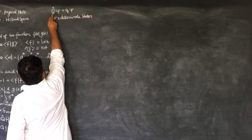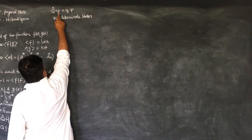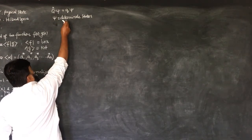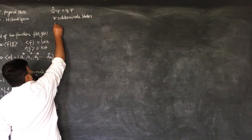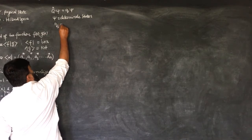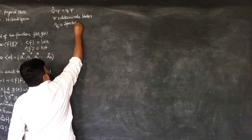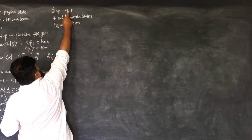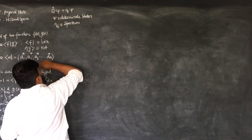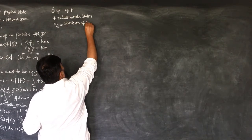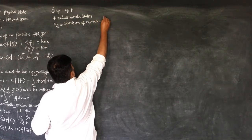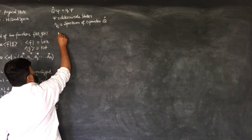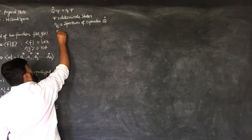These are called the eigenfunctions, and the Q values are called the eigenvalues. If there are different values of Q, then all the possible values we call the spectrum — the spectrum of the operator. When all Q values are different, like Q1, Q2, Q3, we call all those Q values the spectrum of the operator Q. And when all Q values are different from each other, we call them non-degenerate.